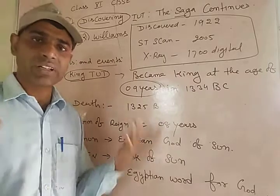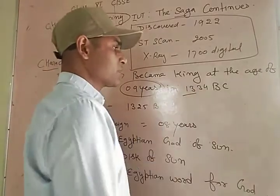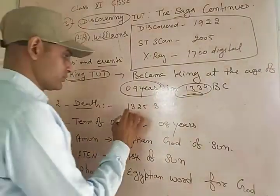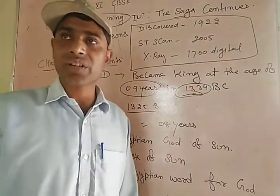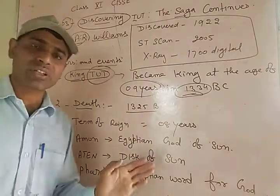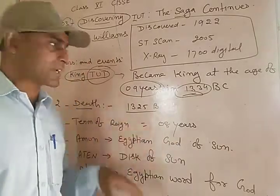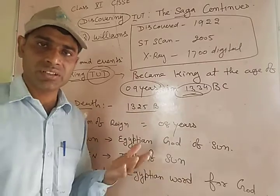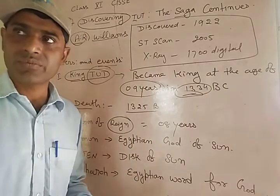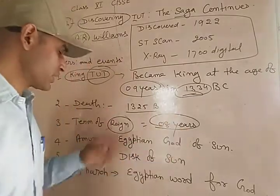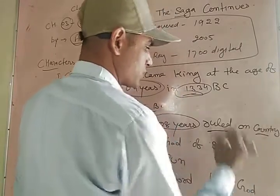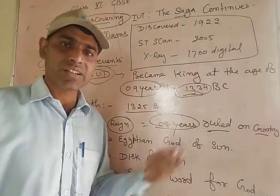Next: in 1334 BC — that was the time — next, about the death of that king: 1325 BC. We can also call him Tutankhamun — that is also the name of the king. In short, the term of his reign means his kingdom period was eight years, and he ruled on the country for eight years. You can see the short term of his life.